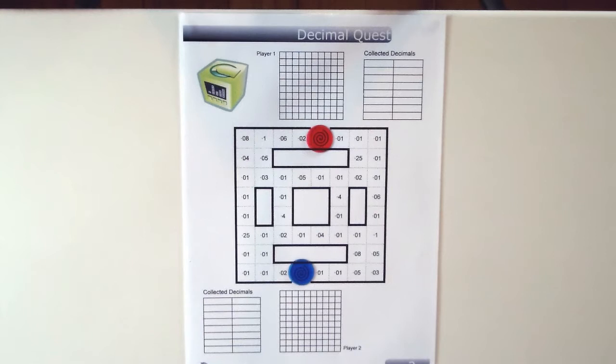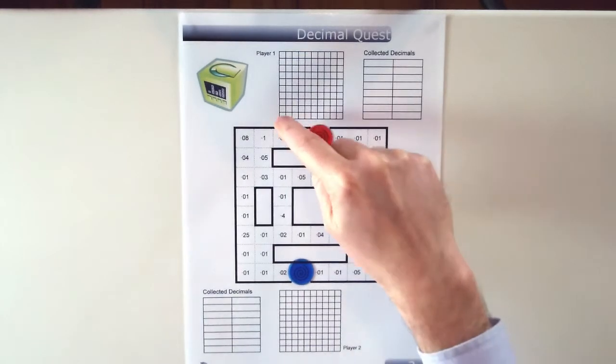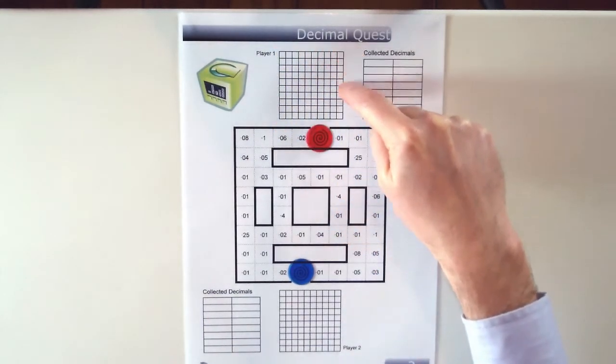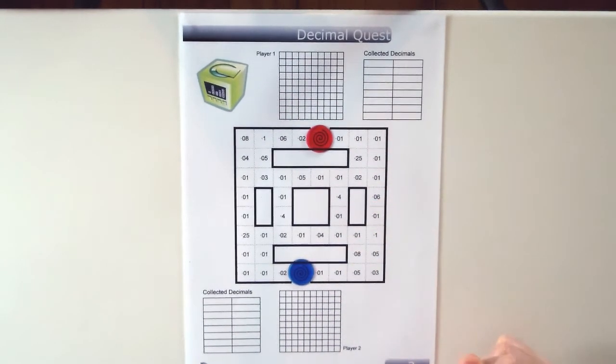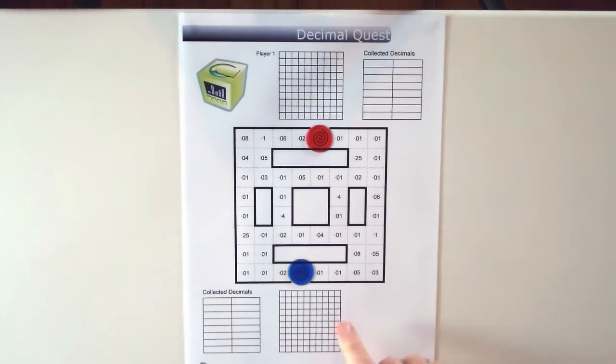Now with Decimal Quest, the aim of the game is to fill in your whole grid there using the decimals that you collect throughout the maze. Each time a player moves, they can move between 1 to 5 spaces.